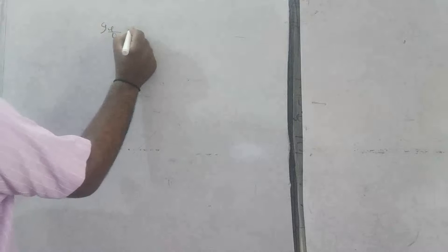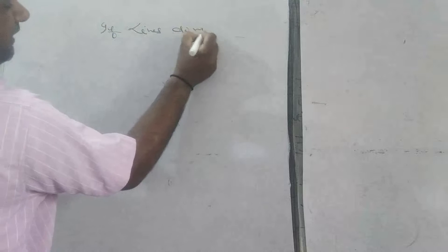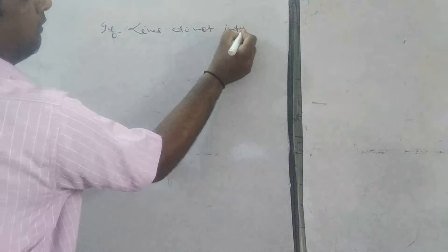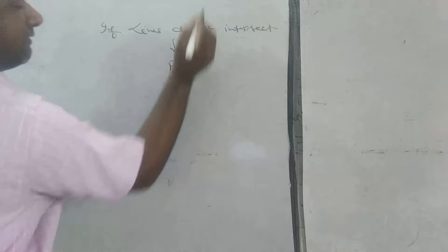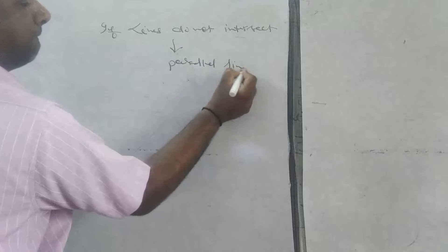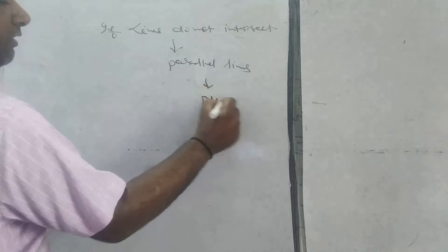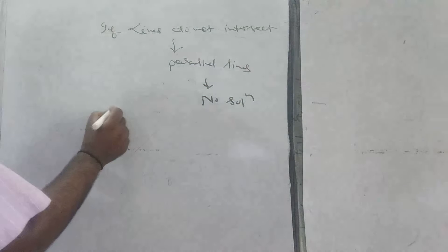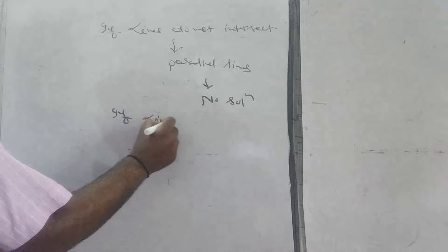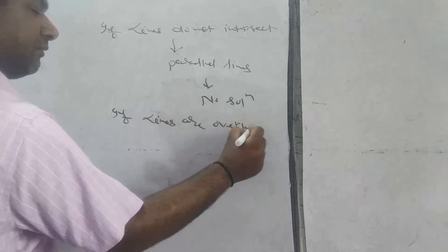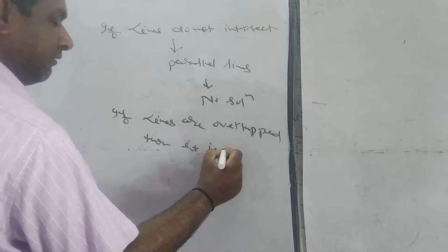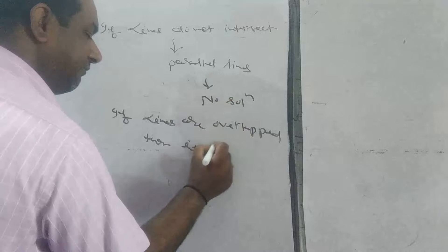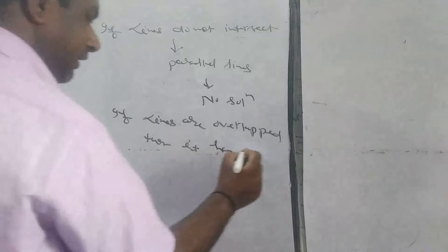If lines do not intersect, then they are parallel lines means no solution. And last, if lines are overlapped, then it has infinitely many solution.